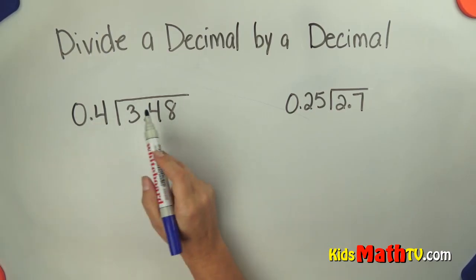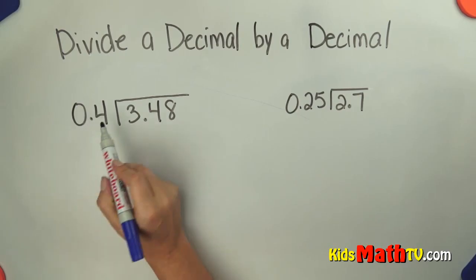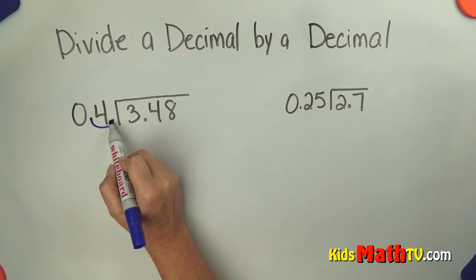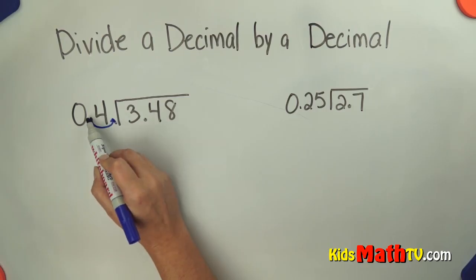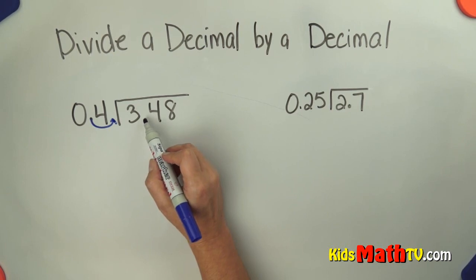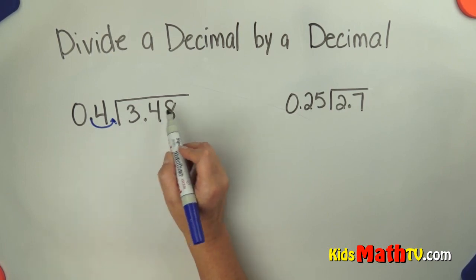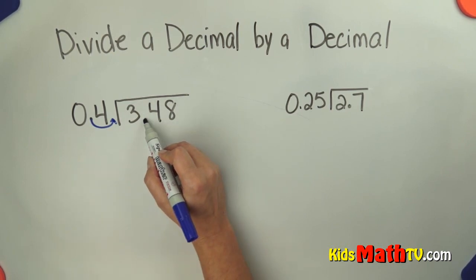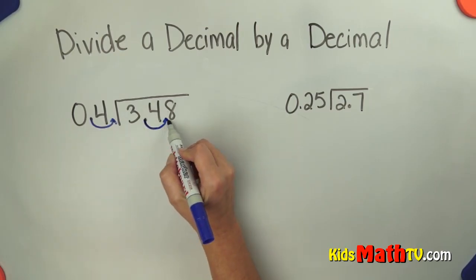Since there is a decimal in our divisor, or this number in front, we are going to move it over as far as it can go. This is jumping one decimal place. So now I have four. I have to move the decimal in my dividend, or this number, the same number of decimal places. So I jumped one time here. I am going to jump my decimal one time here.